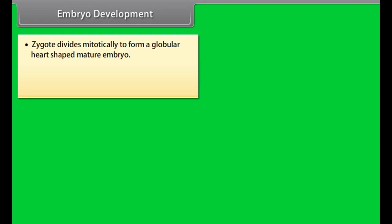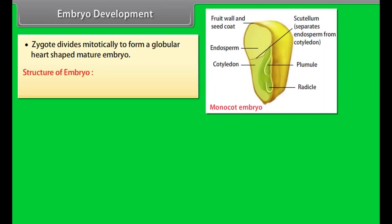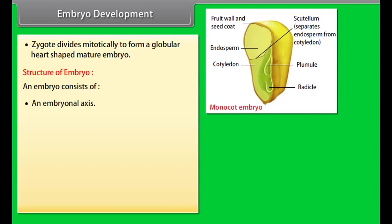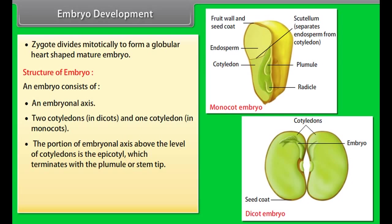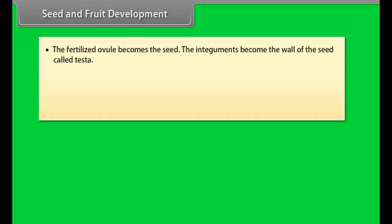The zygote divides mitotically to form a globular, then heart-shaped mature embryo. An embryo consists of an embryonal axis and two cotyledons in dicots (one in monocots). The portion of the embryonal axis above the cotyledons is the epicotyl, which terminates with the plumule or stem tip. The cylindrical portion below the cotyledons is the hypocotyl, which terminates at its lower end in the radicle or root tip.